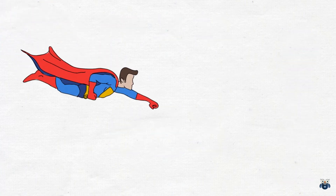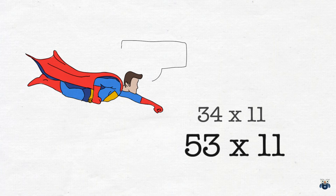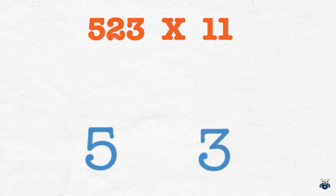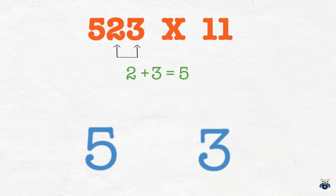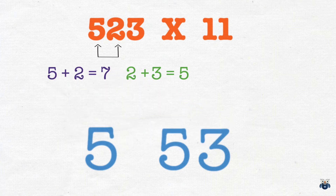Now in both the above examples the Multiplicands had two digits. In this next problem we will deal with a larger Multiplicand. What is 523 times 11? As before, let's put down the first and last digit. Starting from the right, let's pair the numbers and add their results. Our first pair is 23: 2 plus 3 is equal to 5, and we add it to our result. Our next pair is 52: 5 plus 2 is 7, and we add it to our result. We are left with 5753, our final answer.